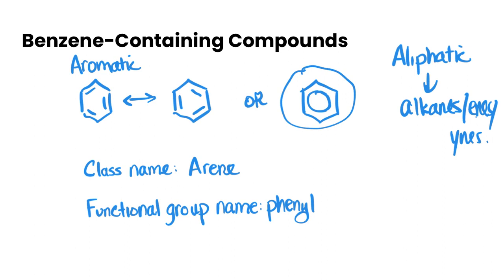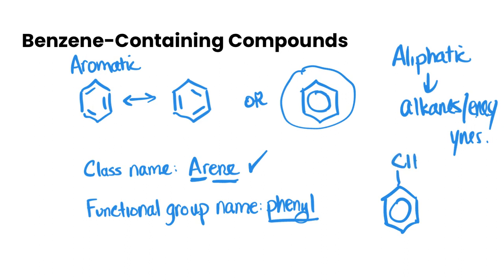It's just another way to represent it. The class name is called arene — aromatic, and the '-ene' comes from the double bonds shown in the structure — and its functional group name is called phenyl. An example might be a substituted group on the benzene ring, where the functional group is the benzene ring itself.